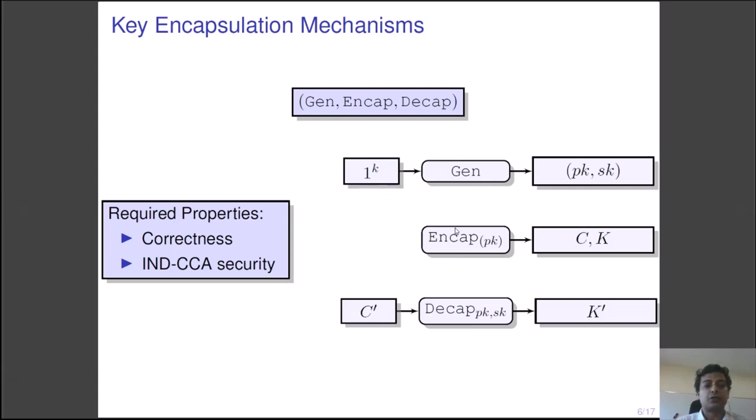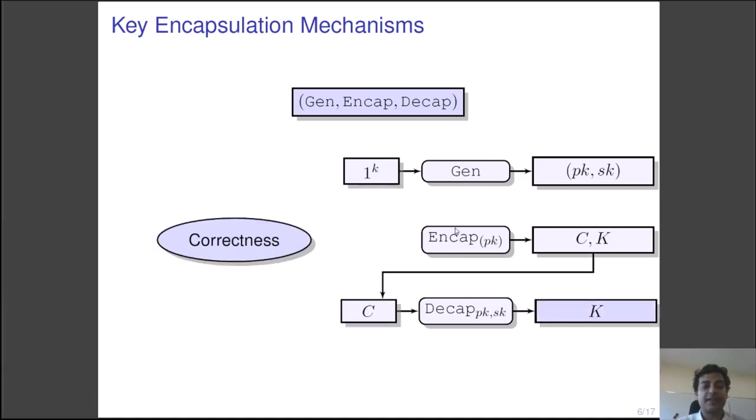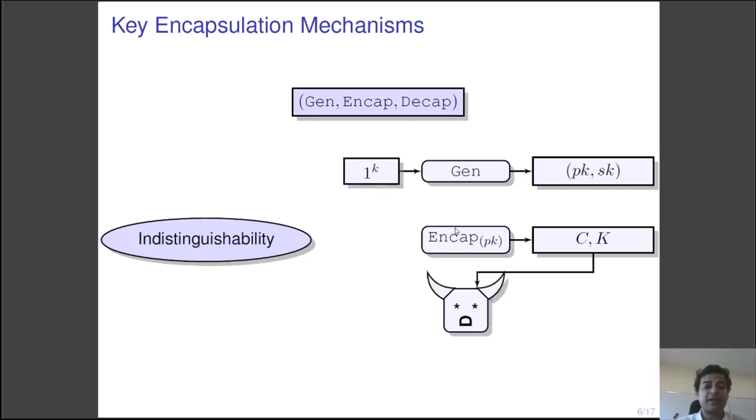Let us informally define the notion of KEM. There are three algorithms: key generation, encapsulation, and decapsulation. The key generation takes the security parameter and produces the public key secret key pair. The encapsulation algorithm which runs on the public key produces the ciphertext and the key pairs C, K. The decapsulation algorithm takes a candidate ciphertext and produces a candidate key. The correctness requirement says that if C which is input to the decapsulation algorithm is indeed produced by the encapsulation algorithm on a public key PK, then the decapsulation algorithm running on the corresponding secret key SK must produce the matching key. The security requirement says that given the ciphertext C, the key K is indistinguishable from a random element from the key space.